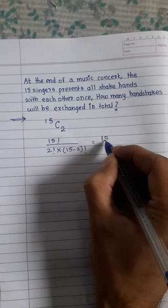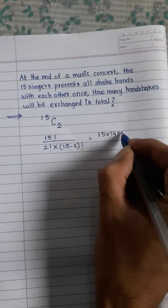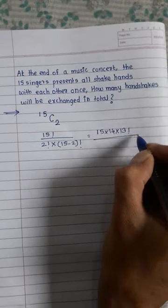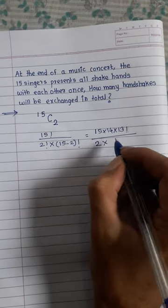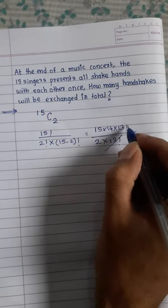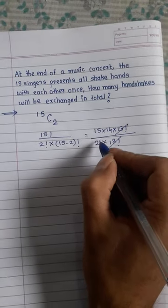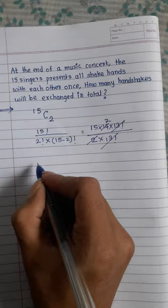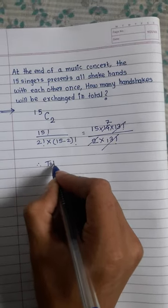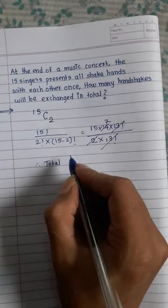This is 15 into 14 into 13 factorial divided by 2 factorial is 2, into 15 minus 2 is 13 factorial. This 13 factorial and 13 factorial get cancelled. 2, 7 of 14. Therefore, total handshakes...